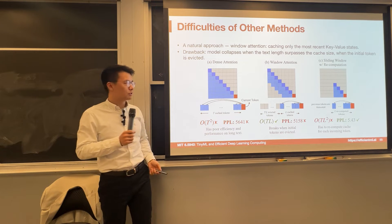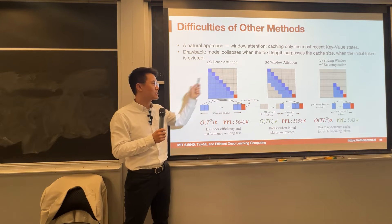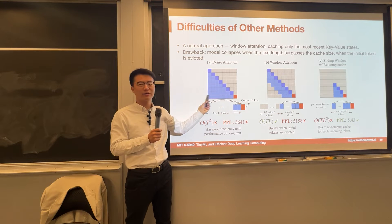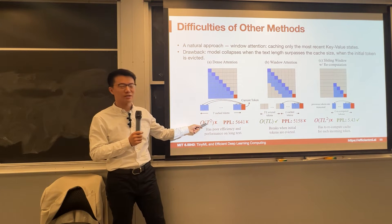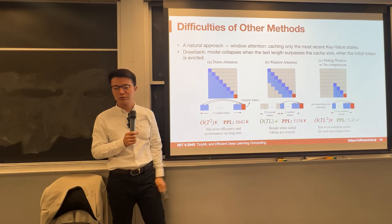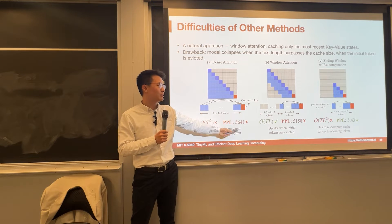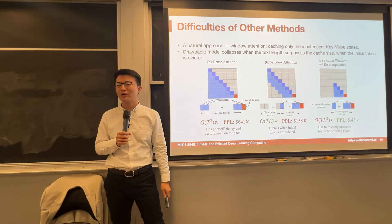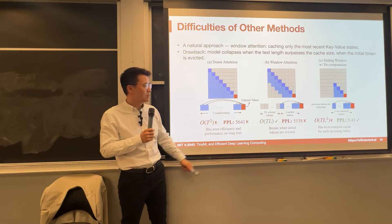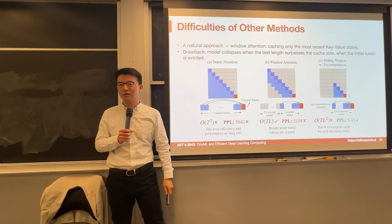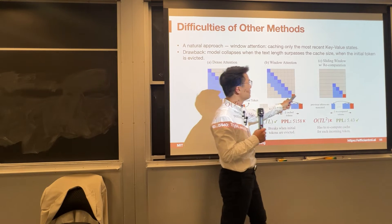Another approach is the original dense attention — you calculate everything ahead of you. The complexity is O(T²), the area of the blue region. But the perplexity is bad because you exceeded your training length. At training time, you have never seen such a long number of tokens — therefore it fails.